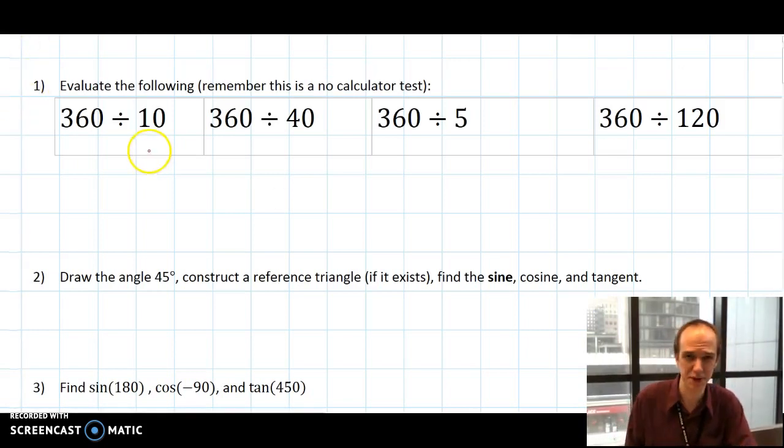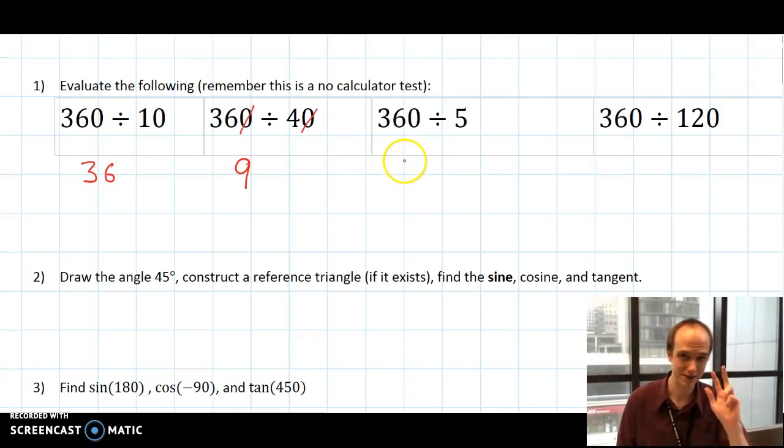Number one, remember this is a no calculator test. 360 divided by 10 is 36. You need to be able to do that without a calculator. 360 divided by 40, zeros cancel, 36 divided by 4 is 9. 360 divided by 5, that one's a little trickier, except we just did 360 divided by 10 is 36, so 360 divided by 5 has to be twice as big as that, so that has to be 72 because 10 is 5 times 2. And then 360 divided by 120, you can cancel the zeros again, 36 divided by 12 is 3.